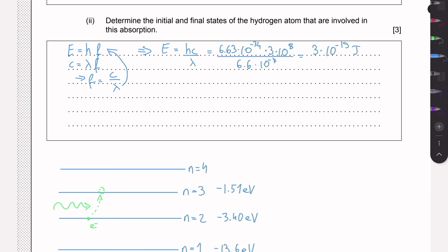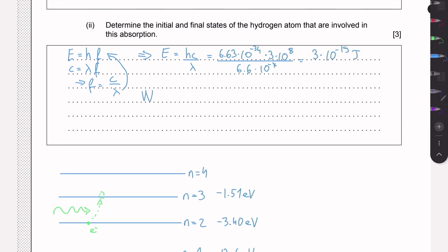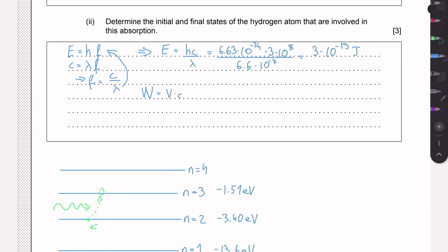We can convert using the definition of an electron volt: it's the work done on an electron when it moves through a potential difference of 1 volt. The formula is W = VQ, and with V = 1 volt and charge of one electron = 1.6×10⁻¹⁹ C, one electron volt equals 1.6×10⁻¹⁹ joules. That's where the name 'electron volt' comes from — E for electron charge, V for voltage.